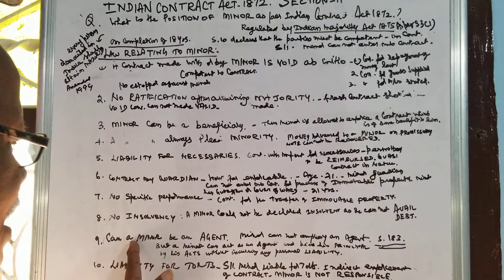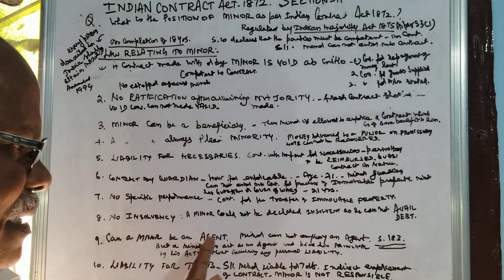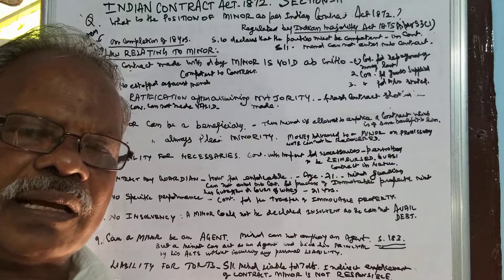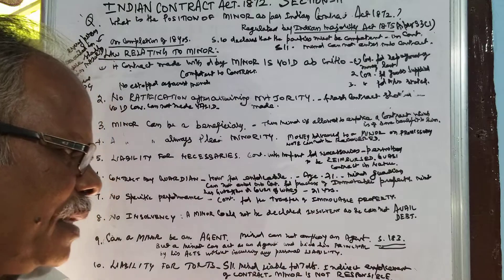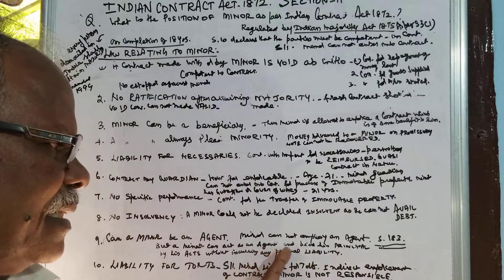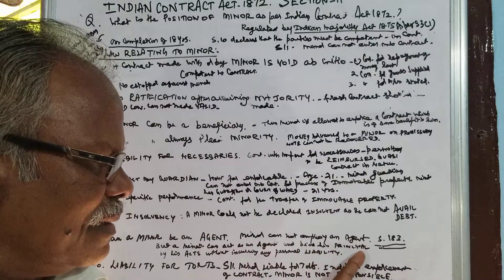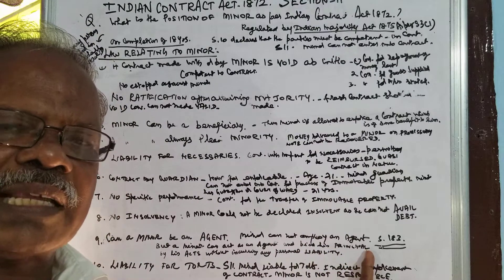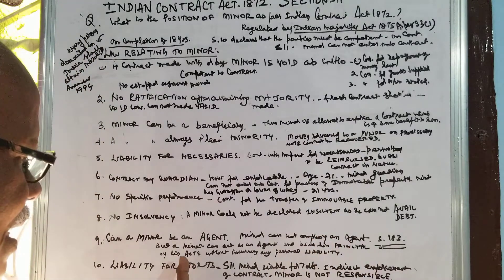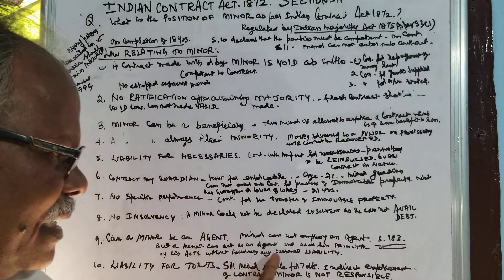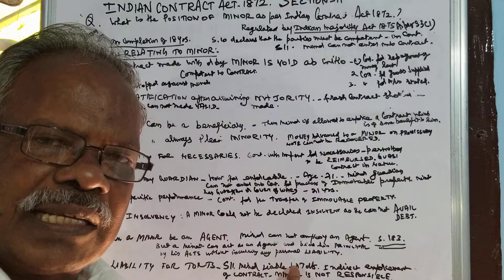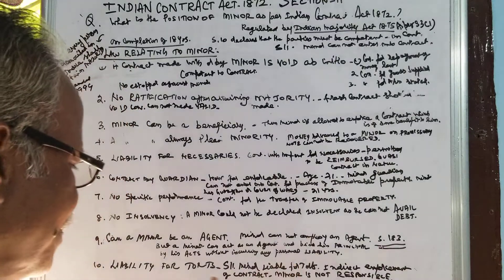According to Section 183, a minor cannot employ an agent to the principal. However, a minor can act as an agent and bind his principal. So a minor can act as an agent to the principal, but cannot employ an agent. When acting as an agent, the minor does so without incurring any personal liability.